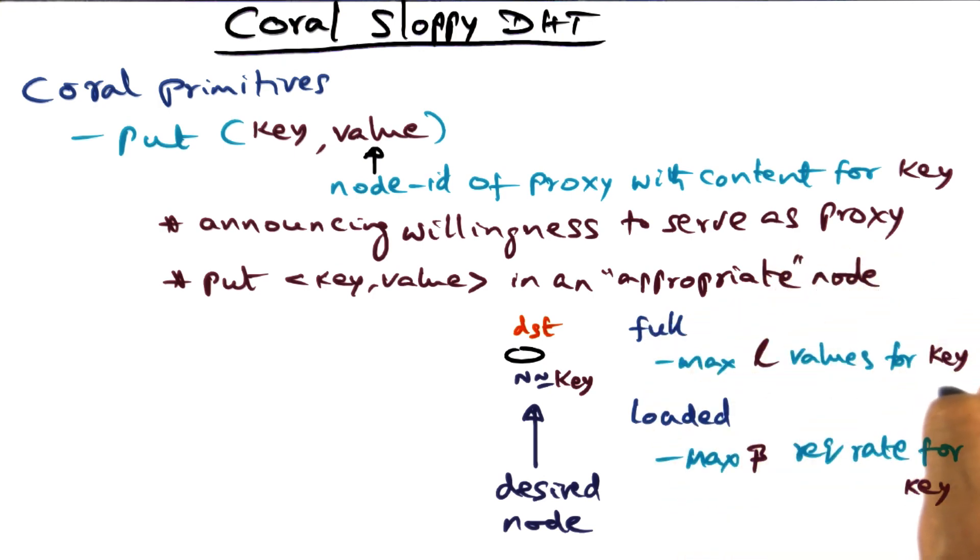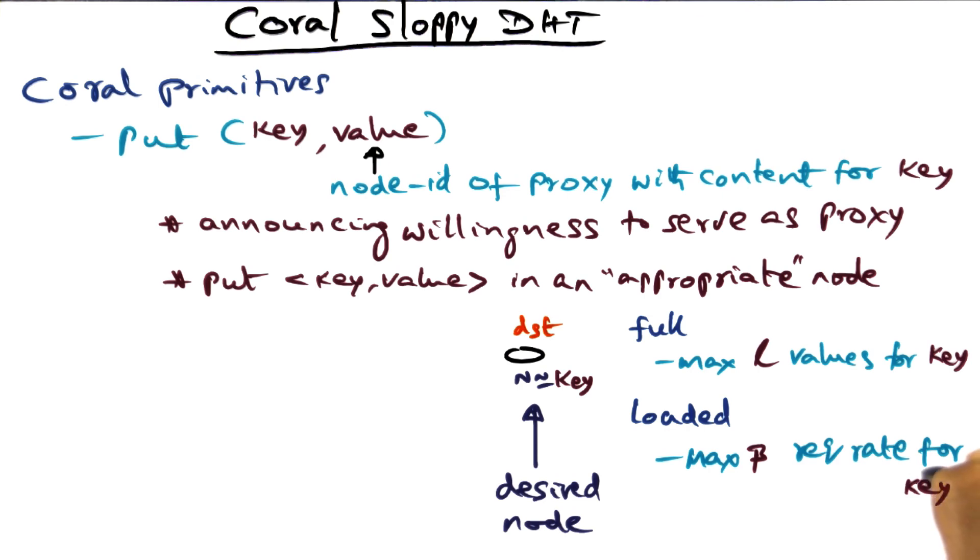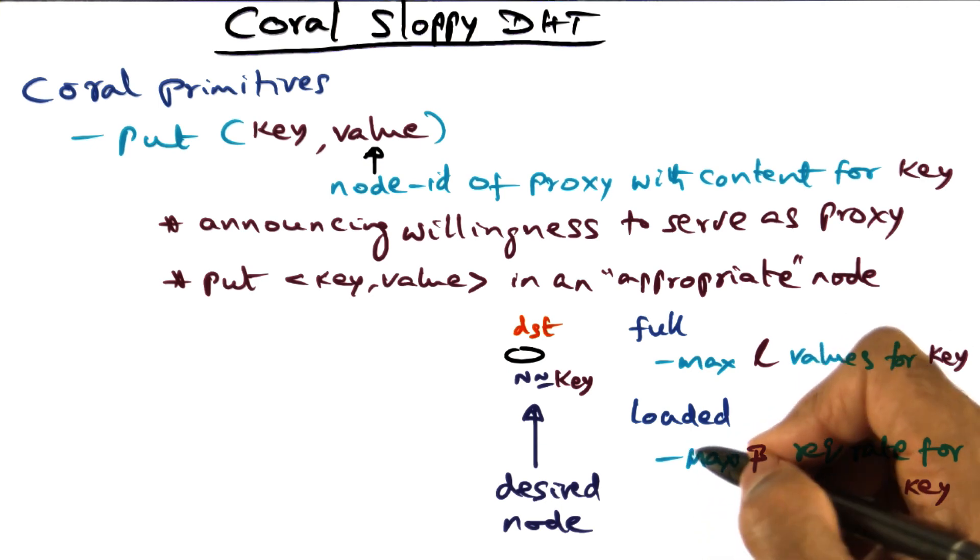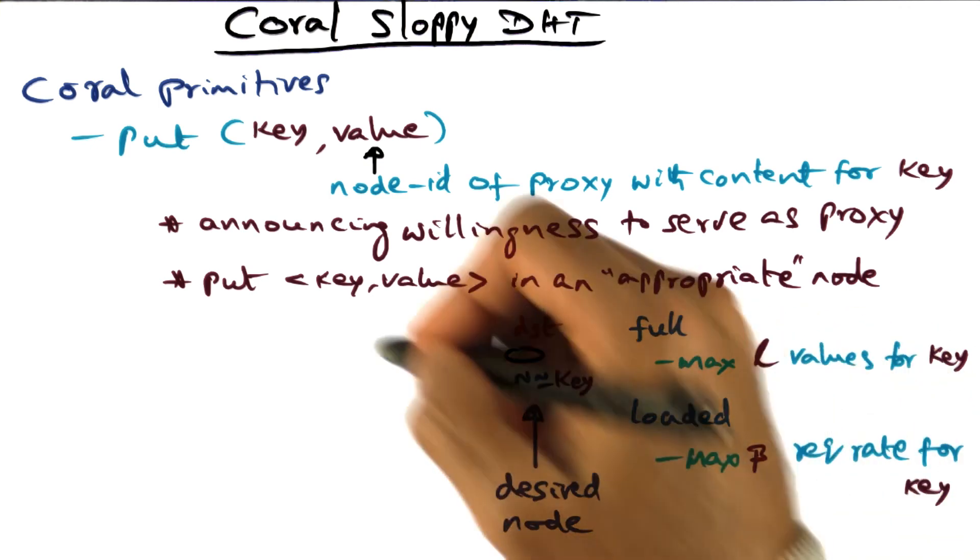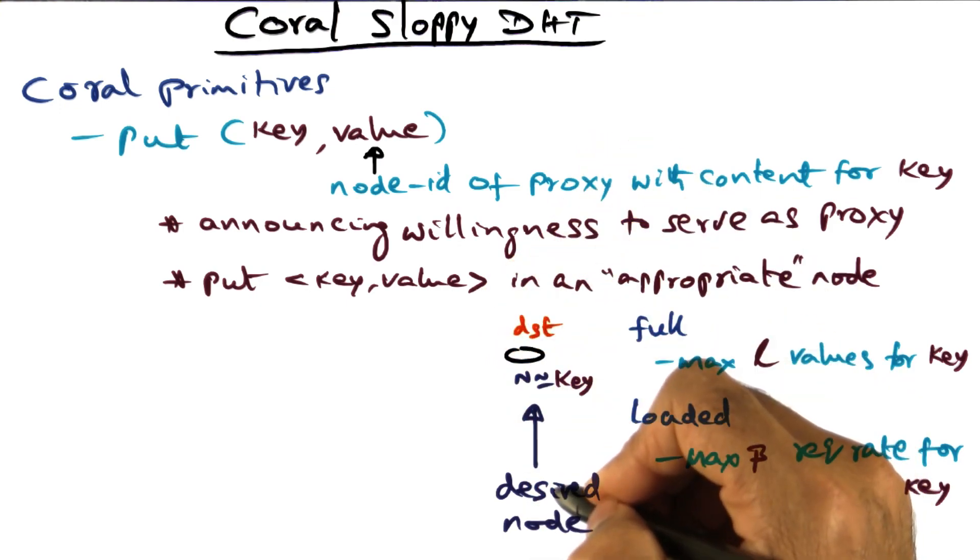So this is a space metric that's saying, how many values I'm willing to store for a particular key. Loaded is stating how many requests per unit time I'm willing to entertain for a particular key. Those are the two metrics we're going to use in determining whether to place a key-value pair at a particular destination node.